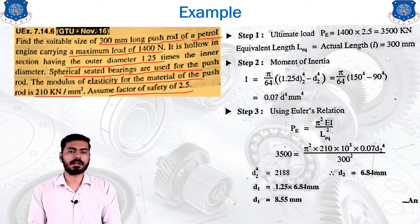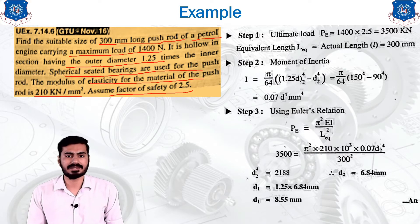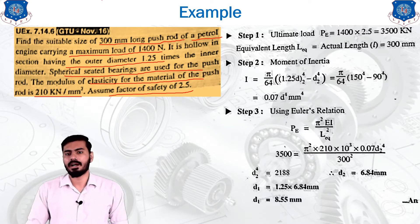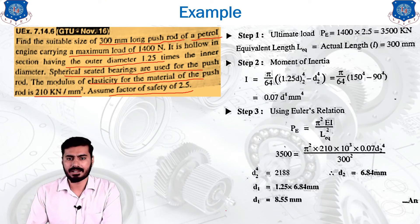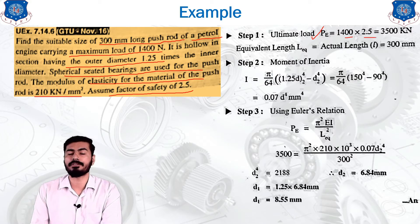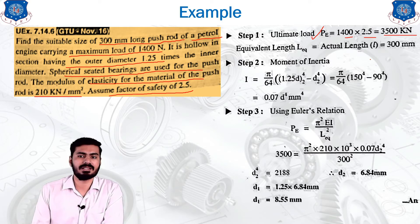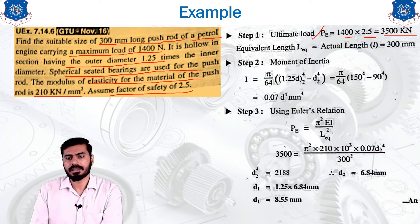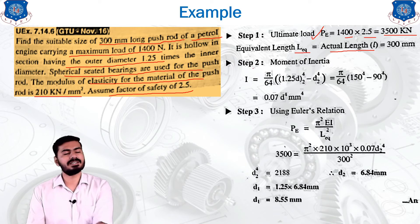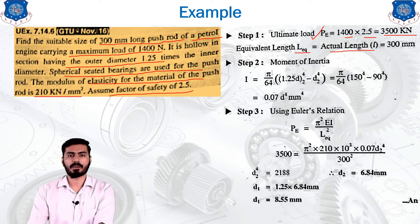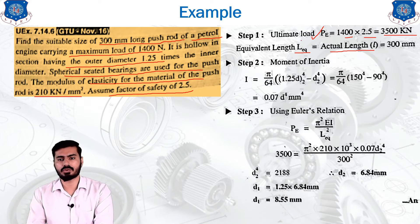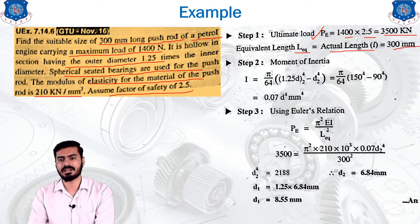The steps of calculation are on the screen. The first step indicates that the ultimate load P_e is calculated using the factor of safety: 1400 multiplied by 2.5 gives 3500 Newton. The equivalent length is given by the actual length for both-end-hinged condition, so the equivalent length equals the actual length, which is 300 mm.